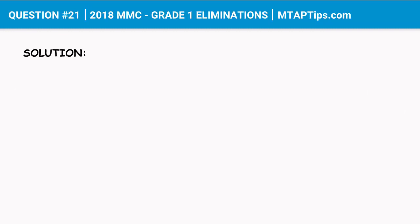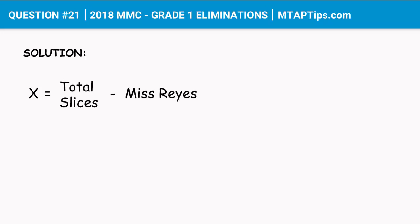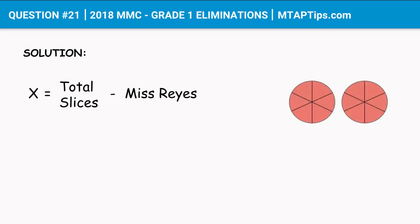Let's make an equation for that. We let X be the unknown number. X is equal to the total number of slices minus the number of slices that Miss Reyes got. But how many slices are there?